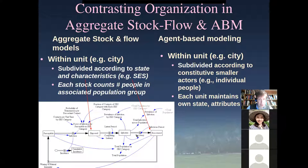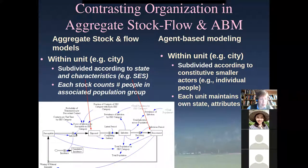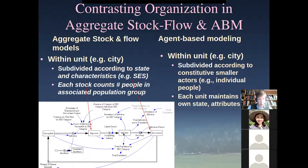In aggregate stock and flow modeling, we divide up the population into a set of state variables or stocks: susceptible, exposed, infected, and recovered. They're subdivided according to their state and characteristics. If we needed to distinguish male susceptibles from female susceptibles, we would have separate stocks for males and females, perhaps reflecting different care-seeking patterns or different likelihoods of being asymptomatic. Each stock counts the number of people who have that condition at any one time.